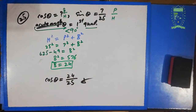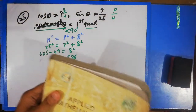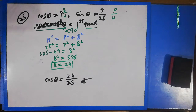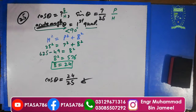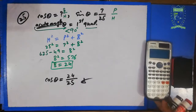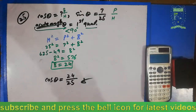Therefore cosθ = base/hypotenuse = 24/25. Since θ is in the first quadrant, cosθ is positive, so the answer is 24/25. This completes chapter six short questions. Subscribe to my channel and click the bell icon for new updates. We will see you in a new lecture. Peace be upon you.